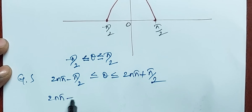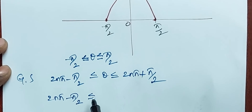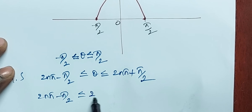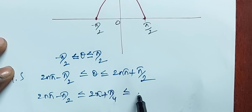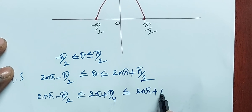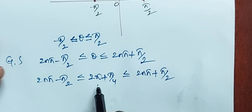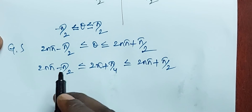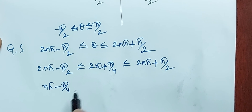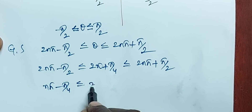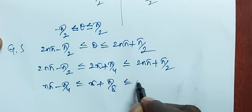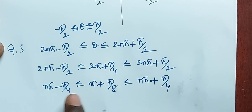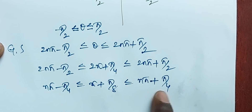Now replacing θ with 2x + π/4: 2nπ minus π/2 ≤ 2x + π/4 ≤ 2nπ + π/2. We need to find the value of x. Dividing this inequality by 2 gives nπ minus π/4 ≤ x + π/8 ≤ nπ + π/4. Now subtract π/8 from this inequality.